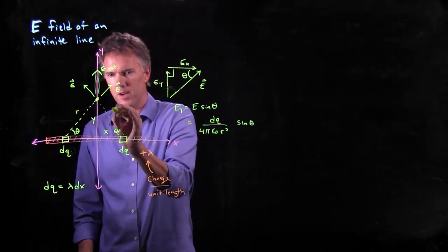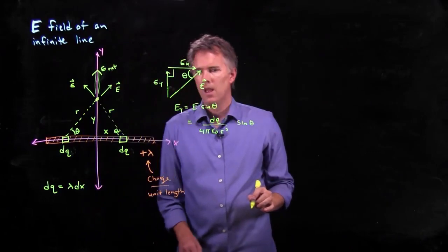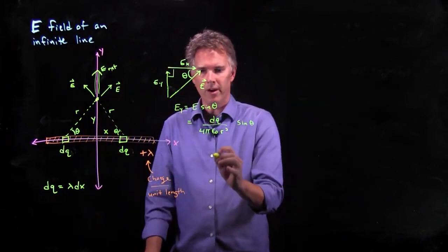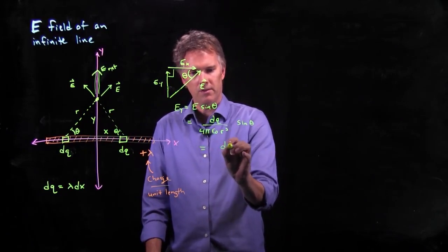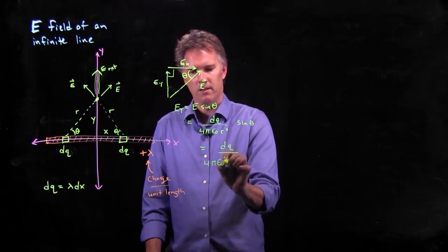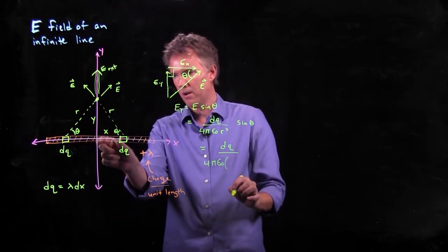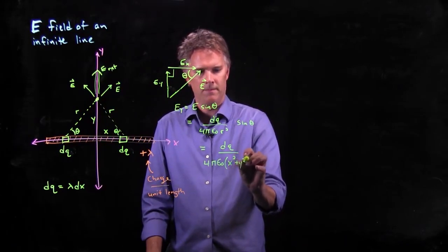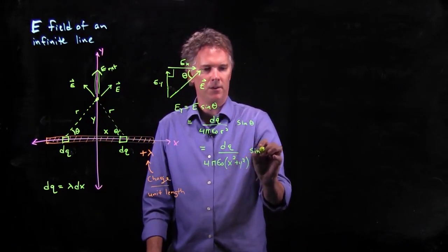But what is r? r is this distance right here. And we don't know exactly what it is, but if we write it in terms of these other variables, it's not too bad, right? It's just x squared plus y squared. And then we're still hanging on to our sin θ.